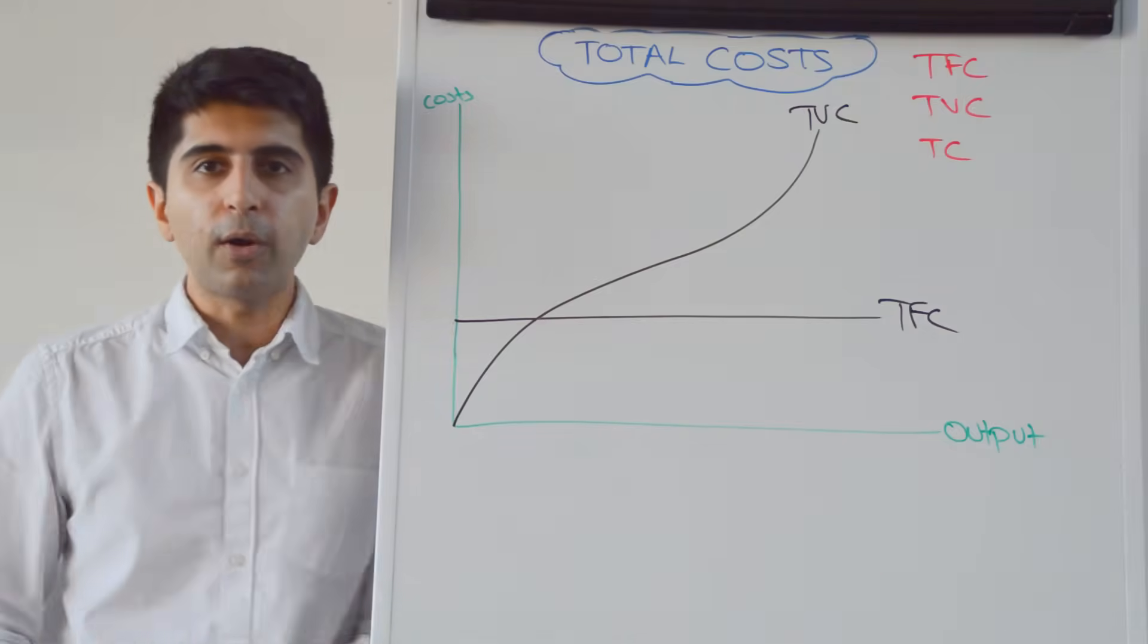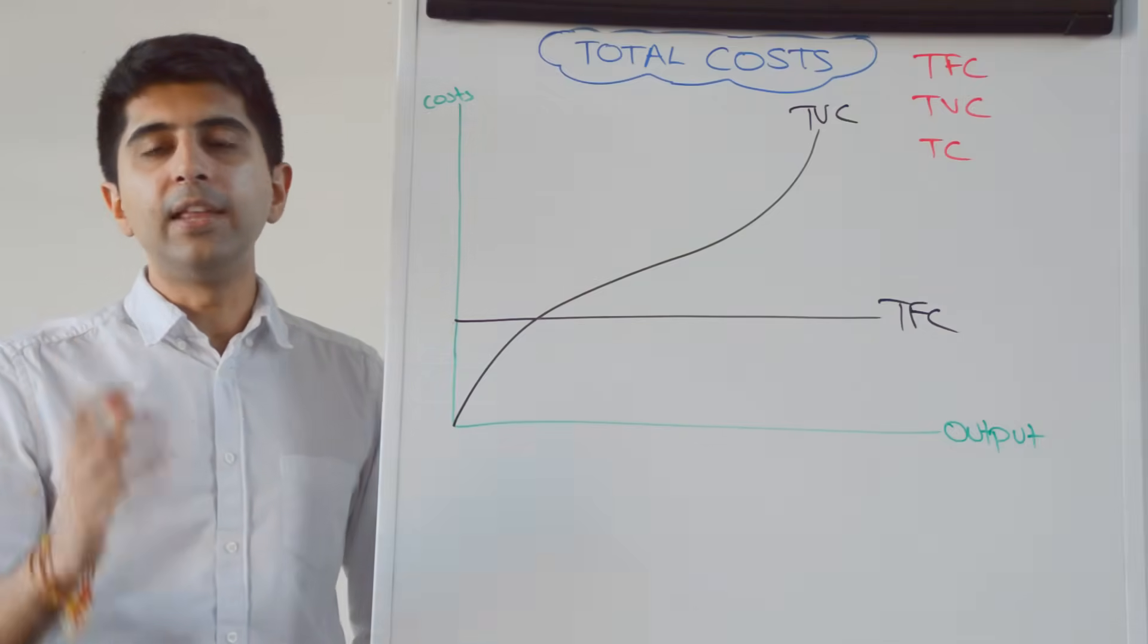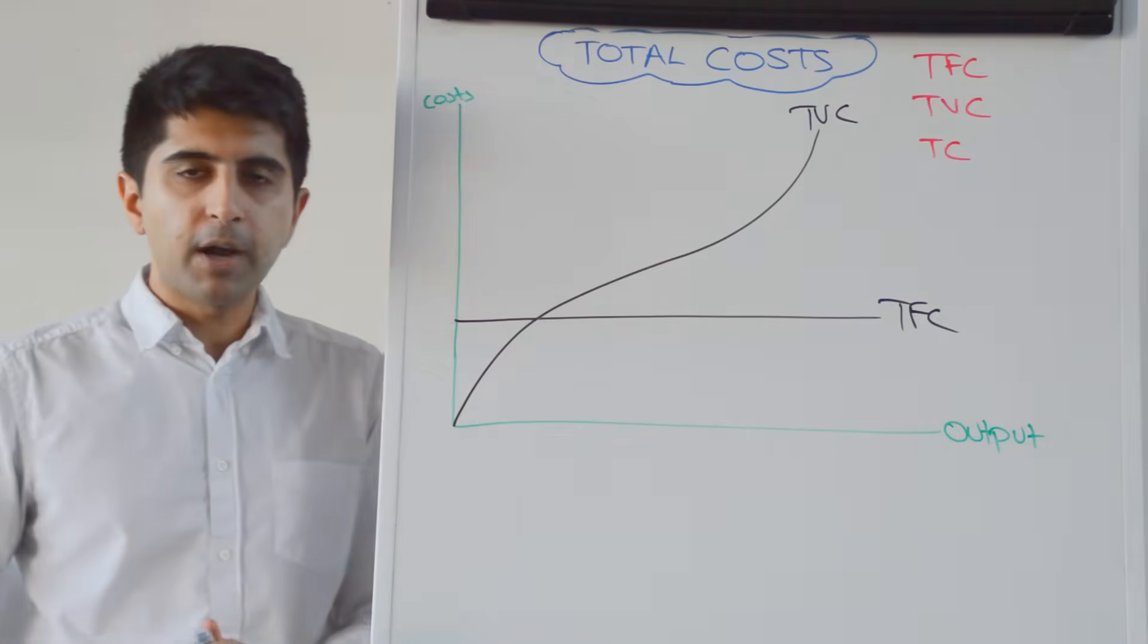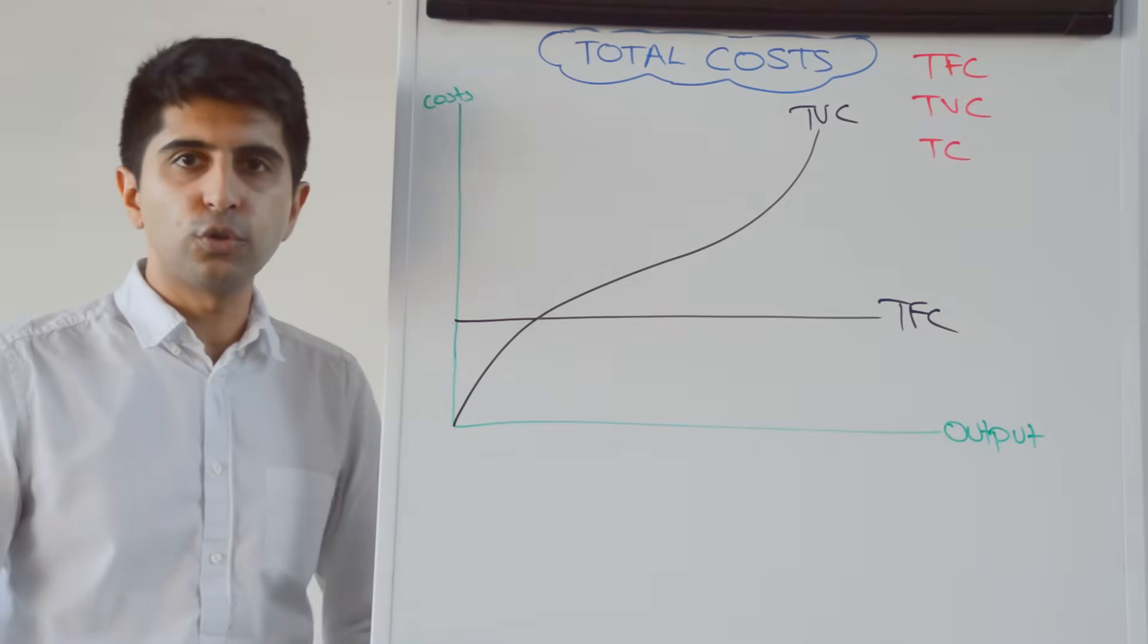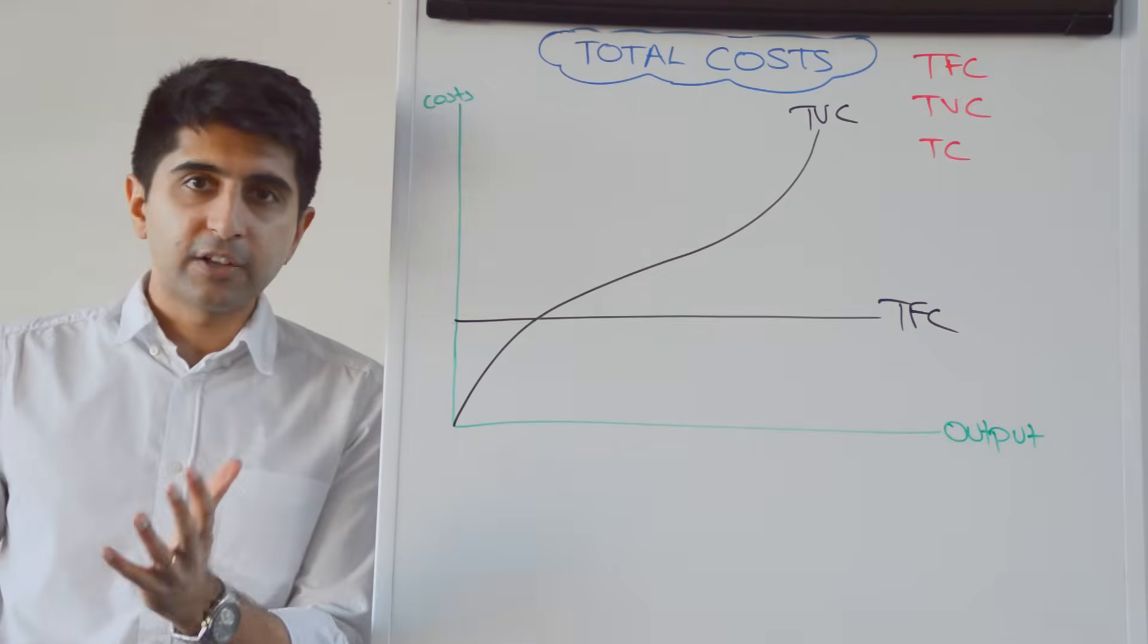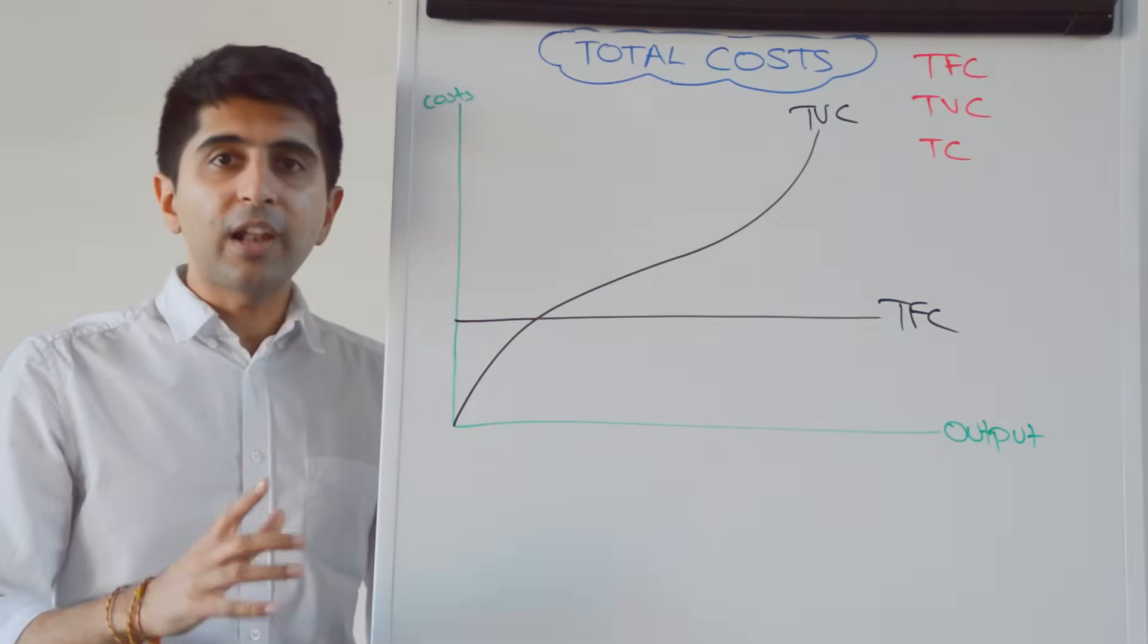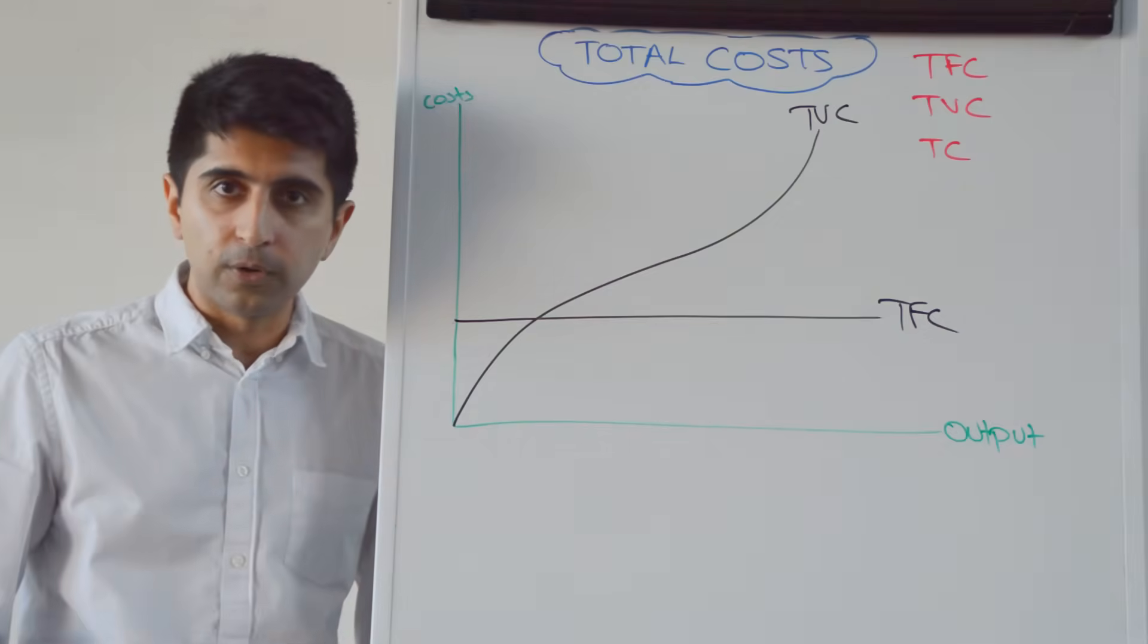Let's assume that wages are the only variable cost in the short run for a given firm. We know that the law of diminishing marginal returns states that in the short run, when we add a variable factor of production, which is labor, to a stock of fixed factors of production, initially, total output will rise and then it will start to fall.